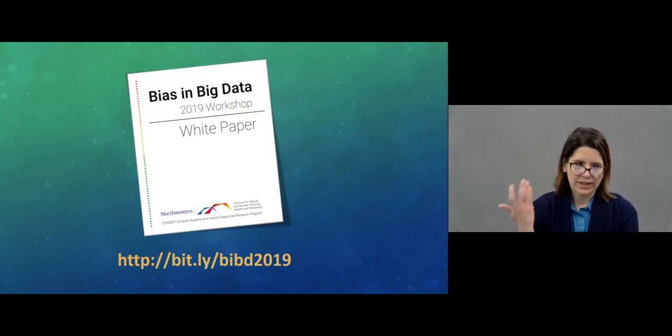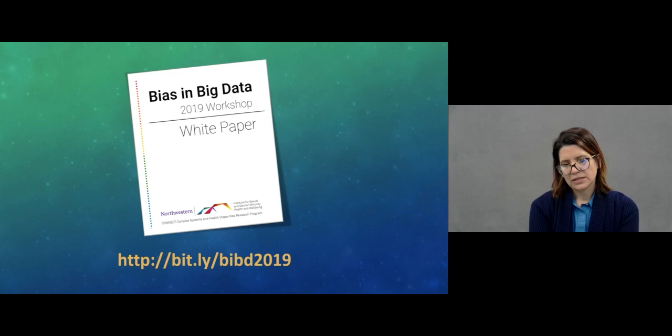From that event we pulled together a white paper called the Bias in Big Data 2019 Workshop White Paper. It's available at this address and what we pulled together in that paper is that there are six themes that emerged. I want to talk a little bit more about one of the themes that I think we can probably best talk about maybe through a little bit of an activity.